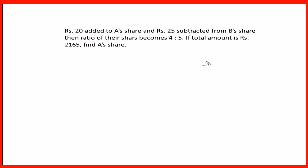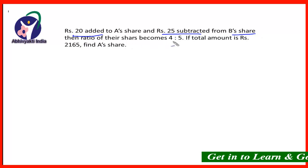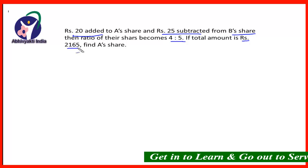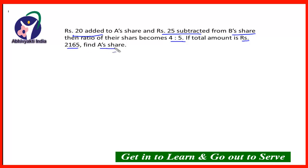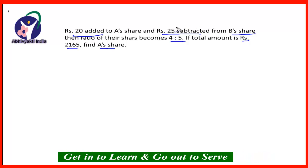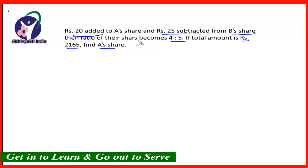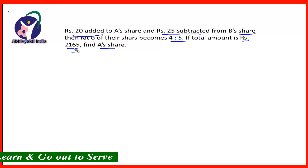Here is the first question on the screen. If Rs. 20 is added to H's share and Rs. 25 subtracted from B's share, then the ratio of their shares becomes 4 is to 5. If the total amount is Rs. 2165, find H's share.